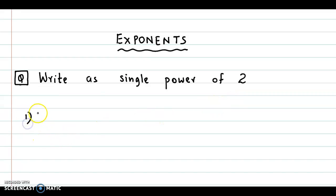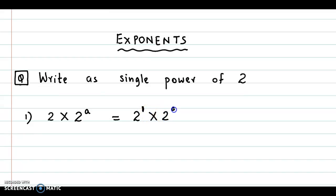Let's take the first example: 2 into 2 raised to a. Now, this 2 is nothing but 2 raised to 1. So we could combine this as 2 raised to 1 plus a. The law applied here is: a raised to m into a raised to n equals a raised to m plus n.